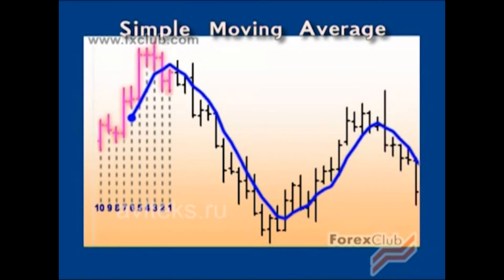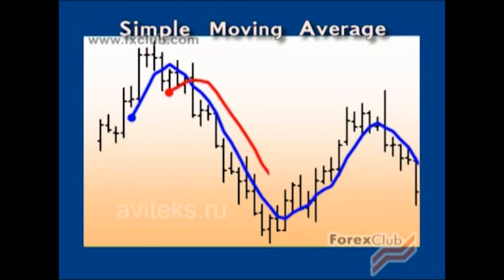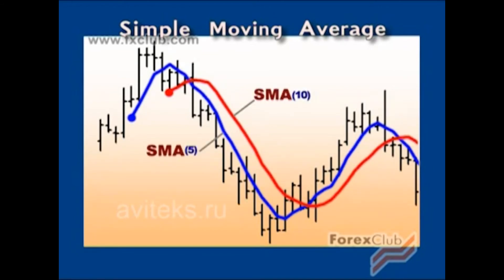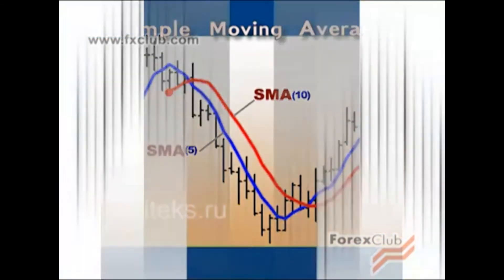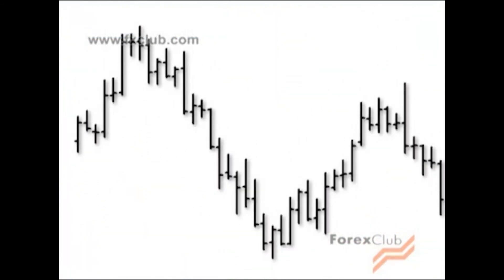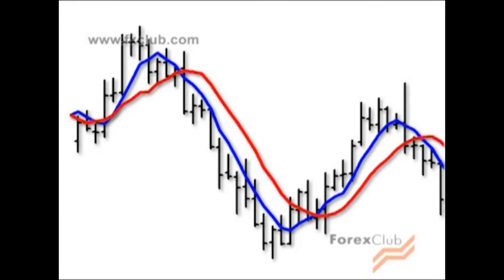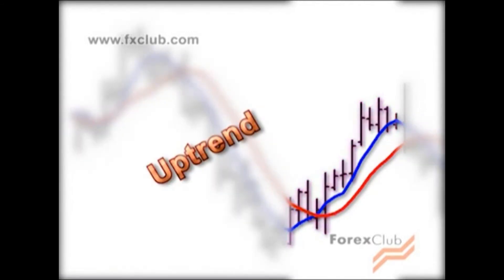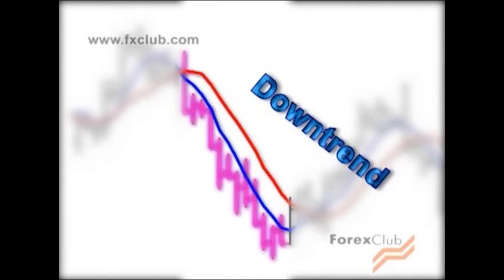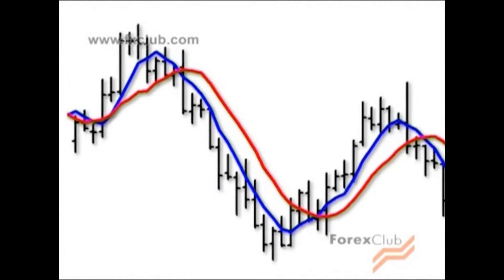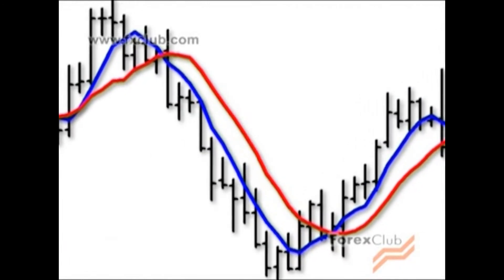If you're using SMA as a trend indicator, the slower SMA is more reliable. Moving averages create curvilinear support and resistance. When price is higher than the simple moving average, it's an uptrend; when price is lower than the moving average, it's a downtrend. This uses the commonly cited drawback of moving averages — that they lag behind the price chart — to our advantage.